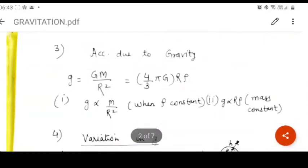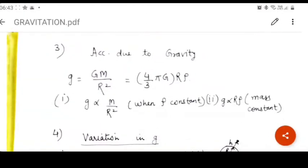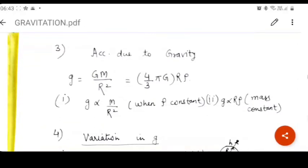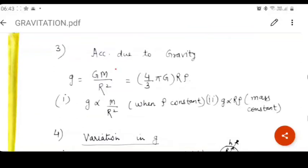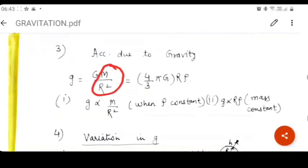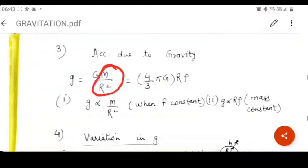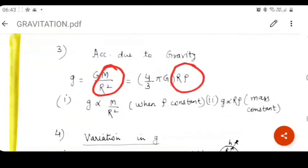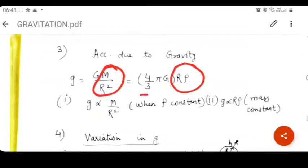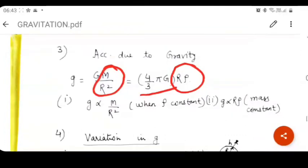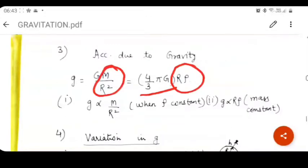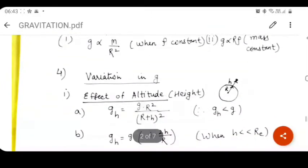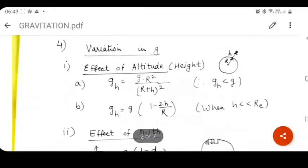Next topic we say that acceleration due to gravity or the relationship between small g and capital G. We get small g is equal to capital G capital M upon R square. Hence, it is directly proportional to M upon R square. But in terms of density and radius, it is directly proportional to the product of radius and density, where 4 by 3 pi G should be treated as a proportionality constant. Hence, we get that g is directly proportional to M upon R square and g is directly proportional to R into rho.